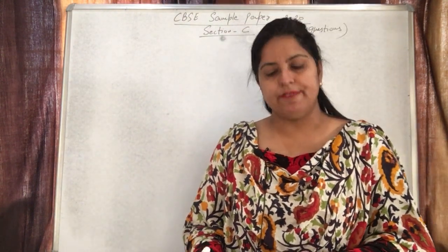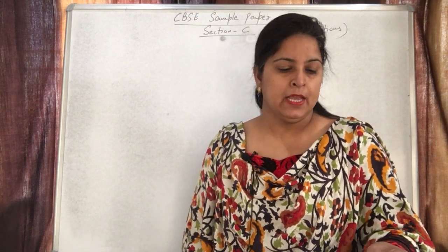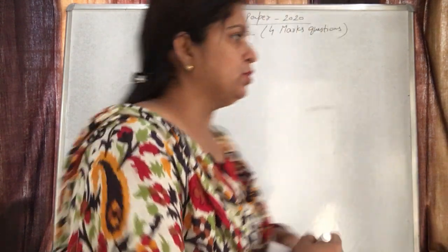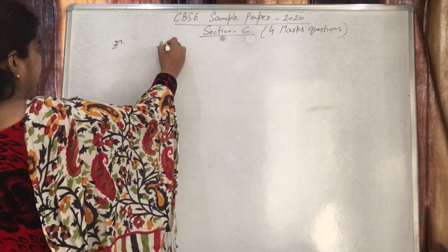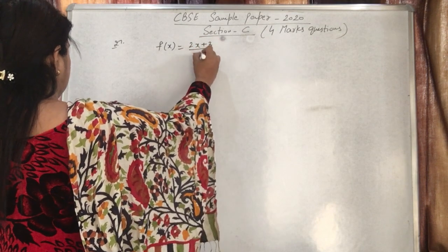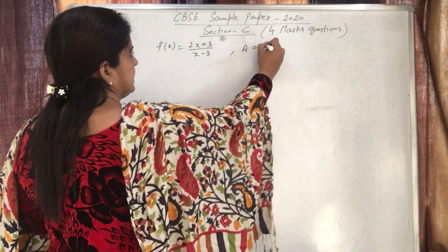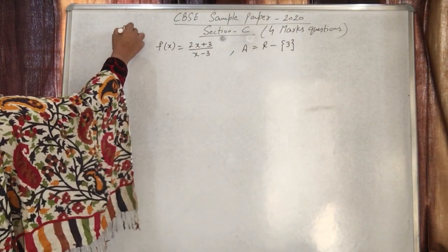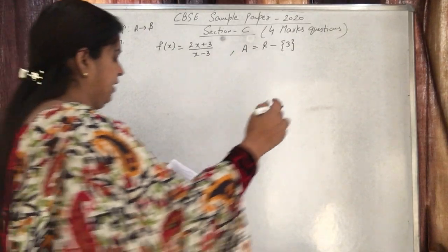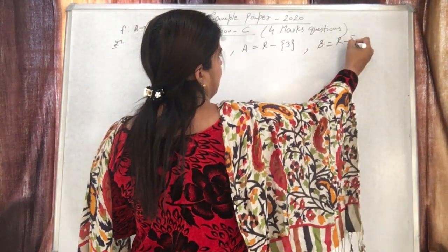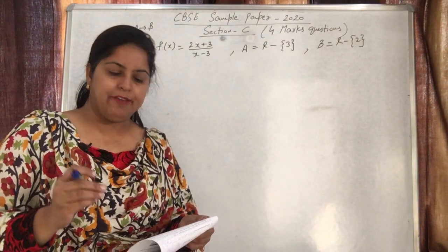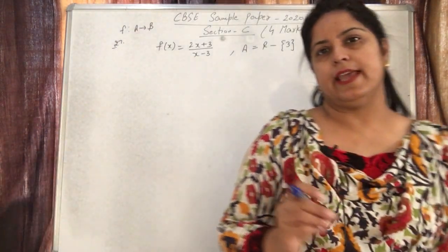We will now discuss Section C starting from question 27. Let f from A to B be a function defined as f(x) = (2x+3)/(x-3), where A is ℝ minus {3} and B is ℝ minus {2}. Is the function one-one and onto? Is f invertible? If yes, then find its inverse.